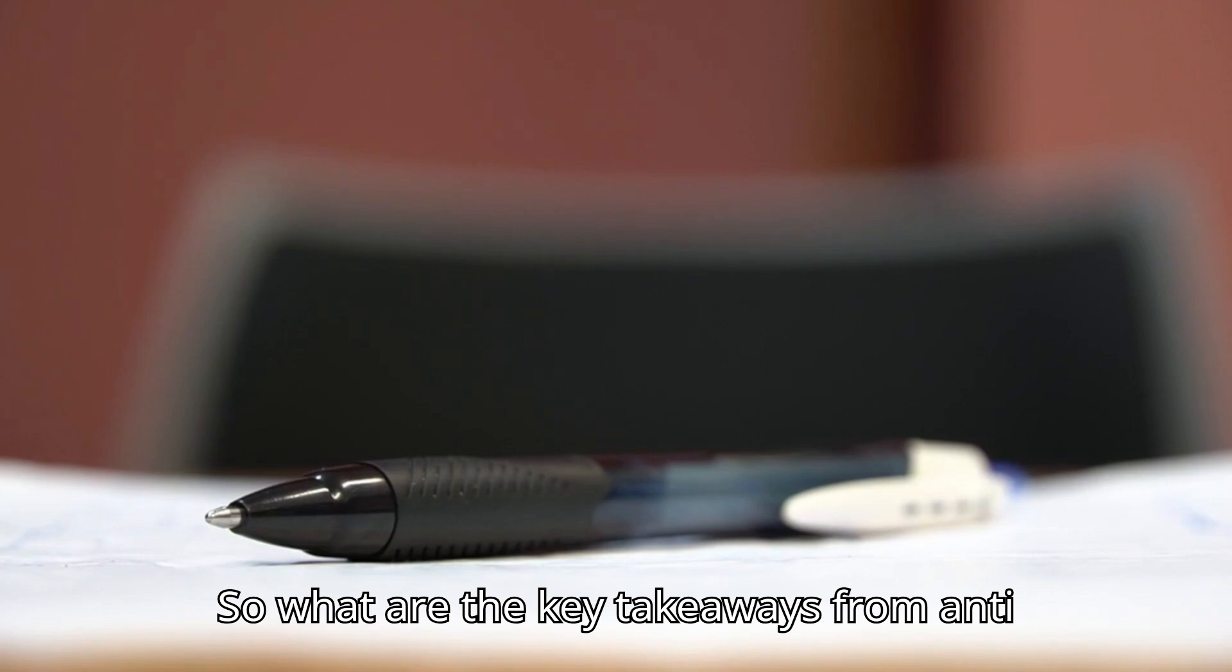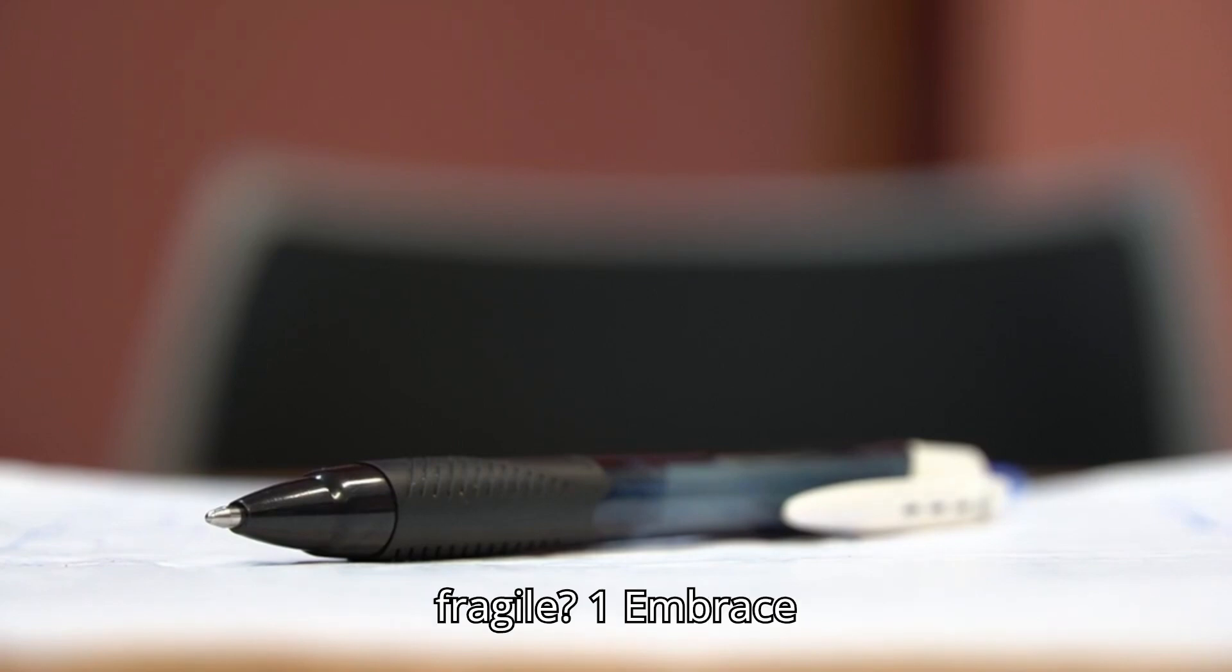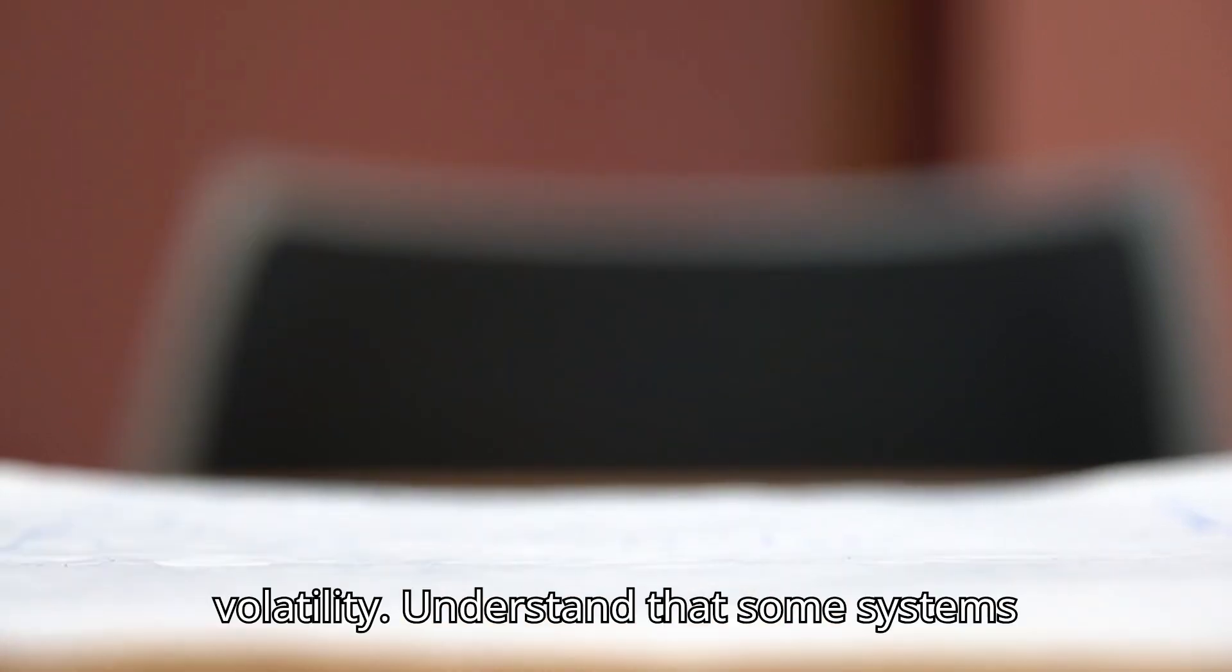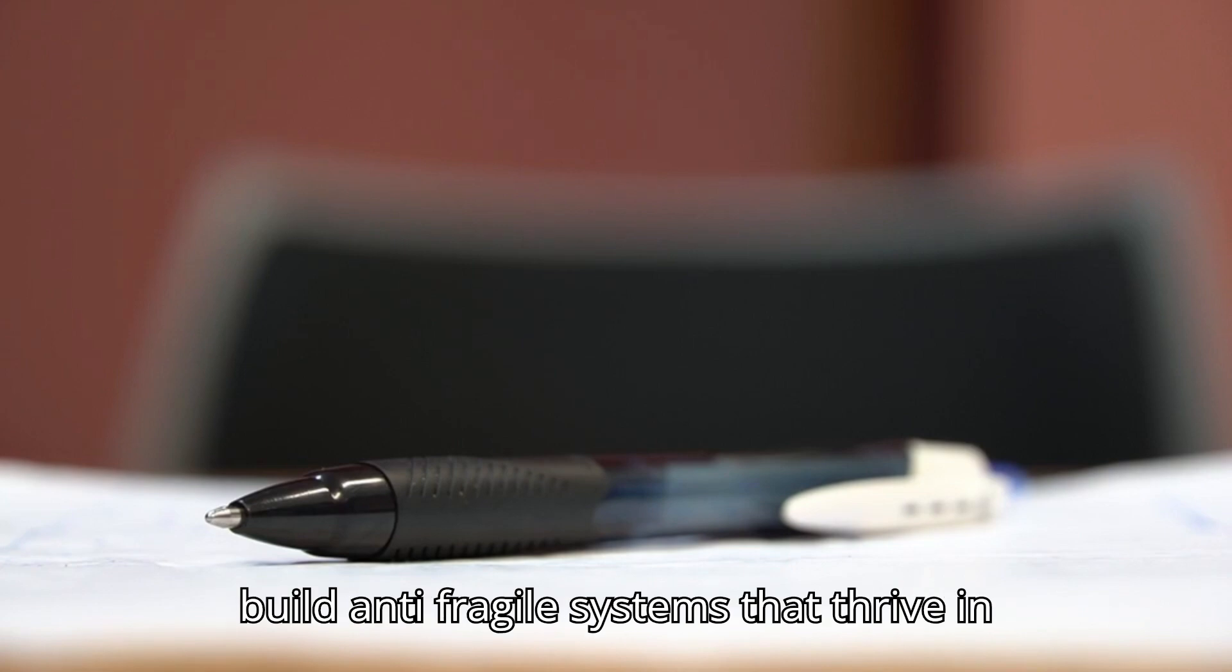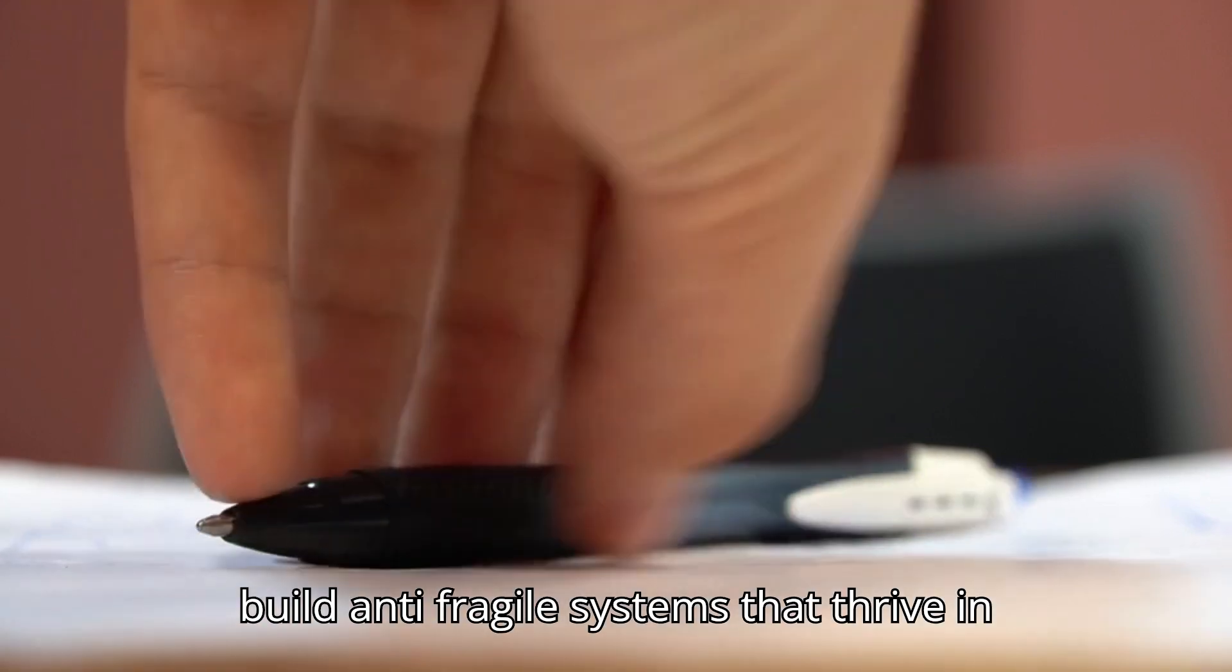So, what are the key takeaways from anti-fragile? 1. Embrace volatility. Understand that some systems benefit from stressors and shocks. Aim to build anti-fragile systems that thrive in uncertainty.